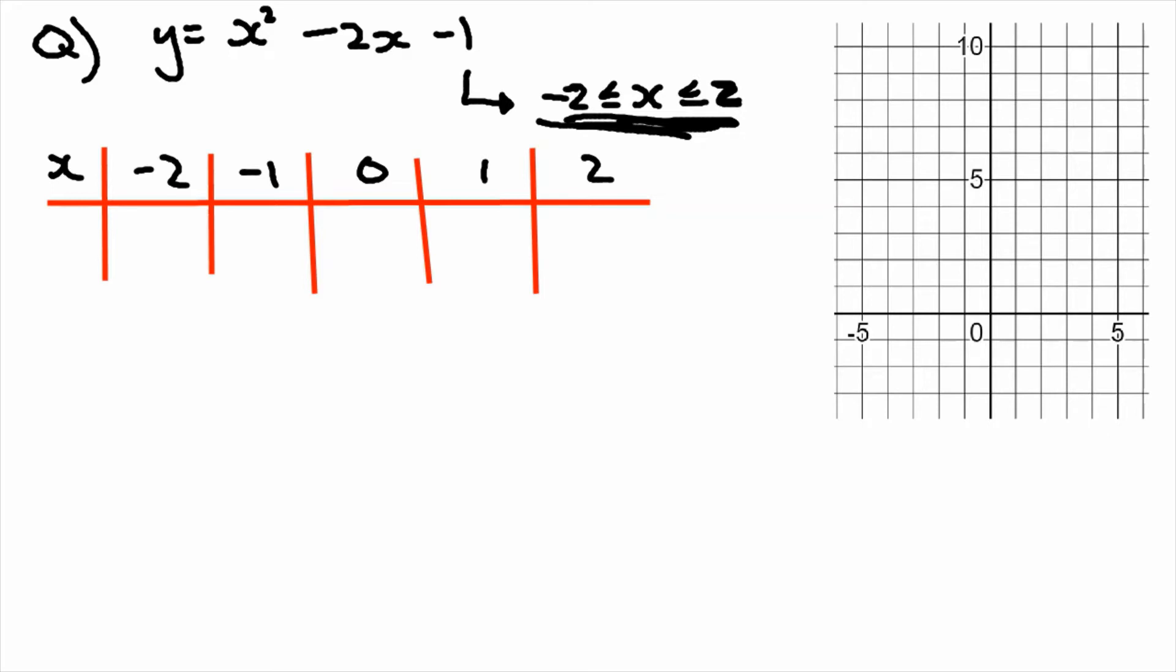So to get our y values we need to substitute in our x values into this equation. So the way I'm going to lay it out is I'm going to say clearly I'm substituting in x equals minus 2 and then work out my y value.